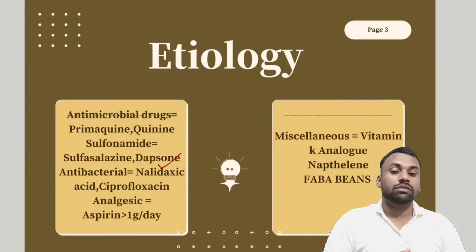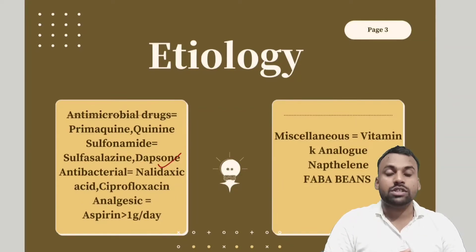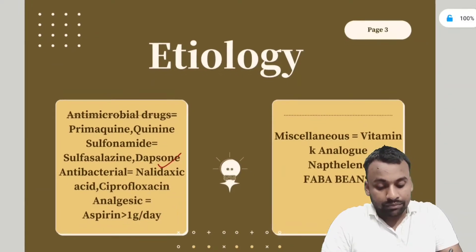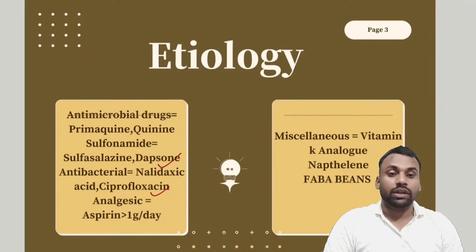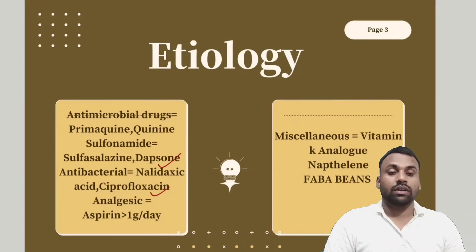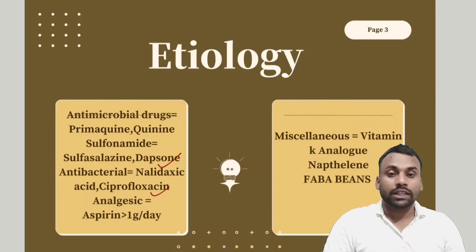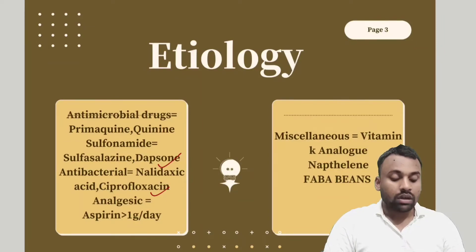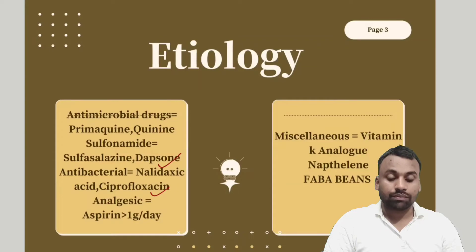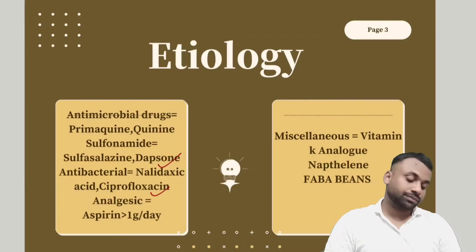Several immunosuppressive drugs may cause acute hemolysis in this disease. Antibacterial drugs like nalidixic acid and ciprofloxacin, and several analgesics when taken at more than one gram per day, can also lead to acute hemolysis in G6PD deficiency. Miscellaneous drugs like vitamin K analogues and naphthalene or naphthol can also precipitate hemolysis.